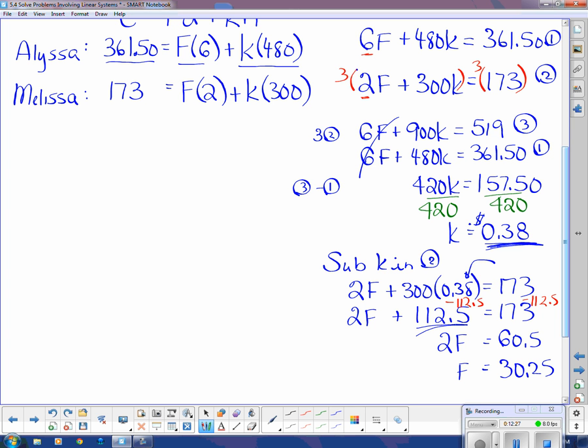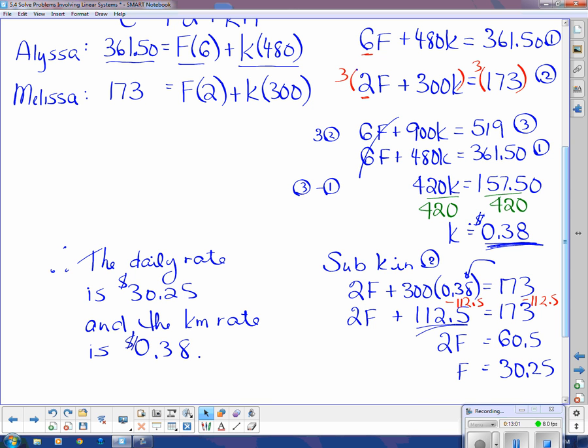So it looks like we can write a therefore statement that says therefore the daily rate is $30.25 and the kilometer rate is 0.38 or 38 cents. And now you can try a few on your own.